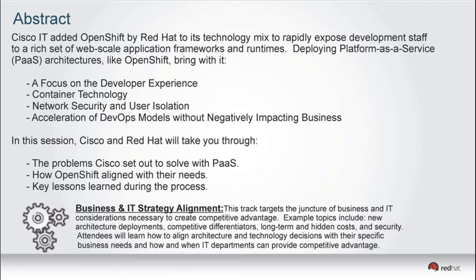Cisco has added the OpenShift technology to its mix to provide a rapid mechanism for web-scale applications and frameworks. They've adopted platform as a service because of key characteristics it brings: a great focus on developer experience with self-service access, multi-tenant container technology for high efficiency, robust security based on the Red Hat Enterprise Linux platform, and the ability to move to a DevOps model while accelerating the business. Sandeep will talk about the environments they had, the challenges they faced, and how OpenShift aligns with their needs, architecture, and key lessons learned.